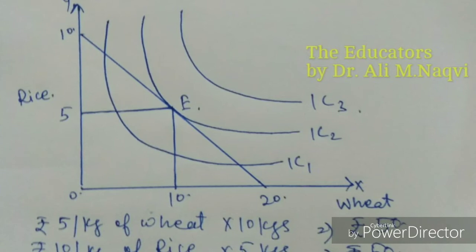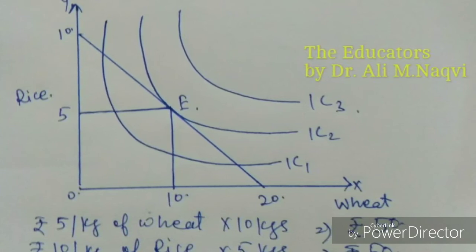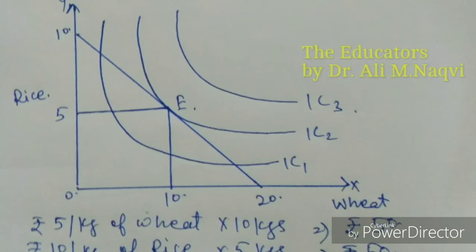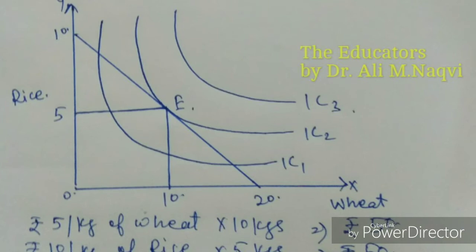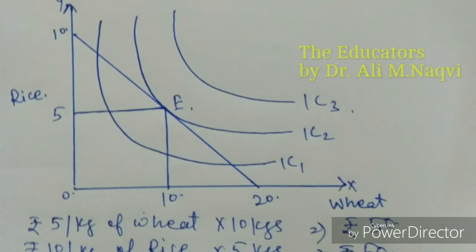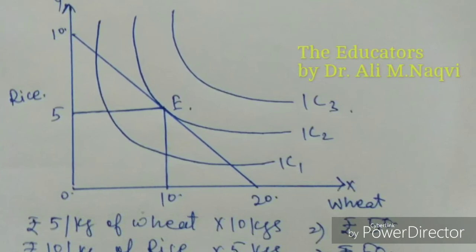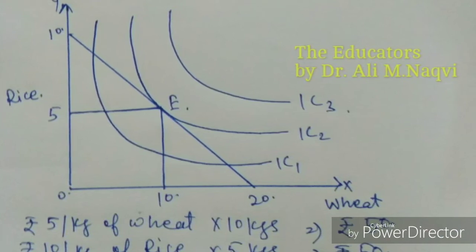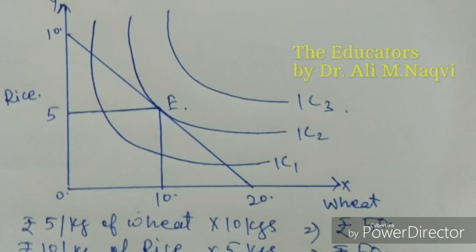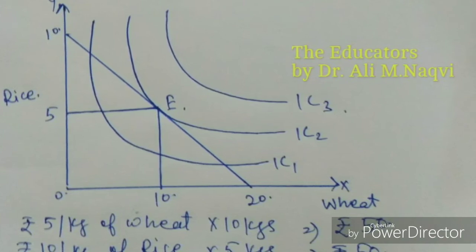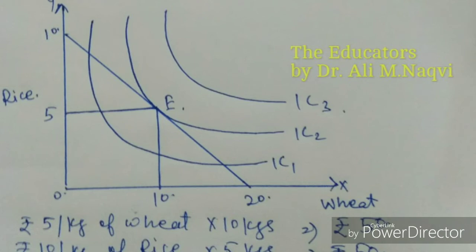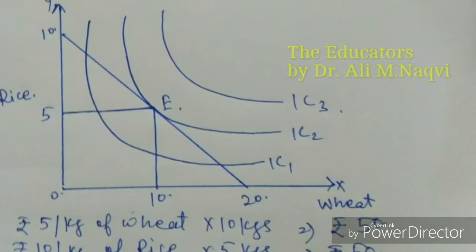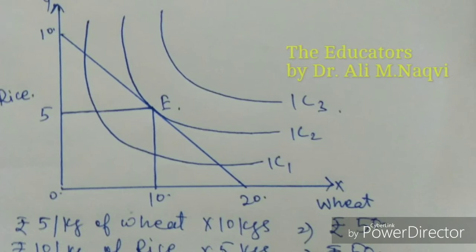This point B is known as the budget line equilibrium. When talking about consumer equilibrium using a budget line, you first explain what the budget line is. Then in the second part, draw the budget line diagram again, with rice on the y-axis and wheat on the x-axis. The line AB represents the budget line.